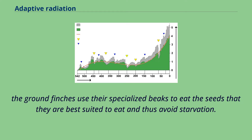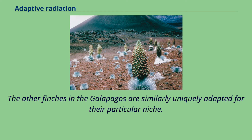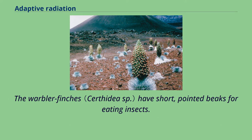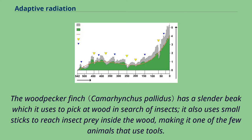The other finches in the Galapagos are similarly uniquely adapted for their particular niche. The cactus finches have somewhat longer beaks than the ground finches, serving the dual purpose of allowing them to feed on cactus nectar and pollen while these plants are flowering, but on seeds during the rest of the year. The warbler finches have short, pointed beaks for eating insects. The woodpecker finch has a slender beak which it uses to pick at wood in search of insects; it also uses small sticks to reach insect prey inside the wood, making it one of the few animals that use tools.